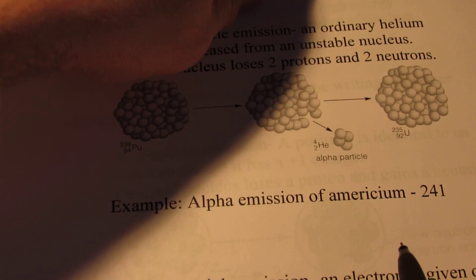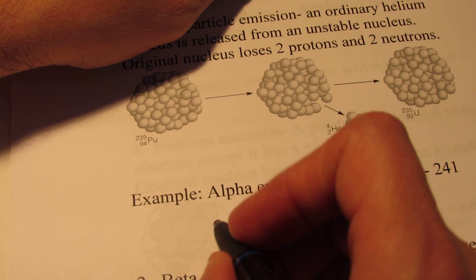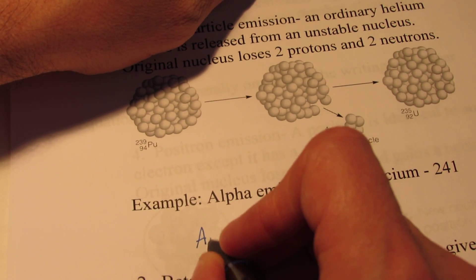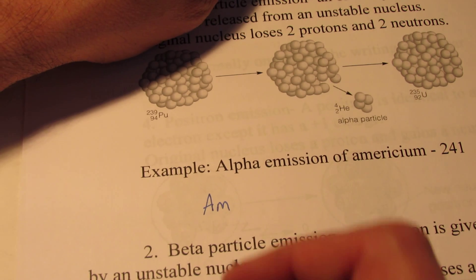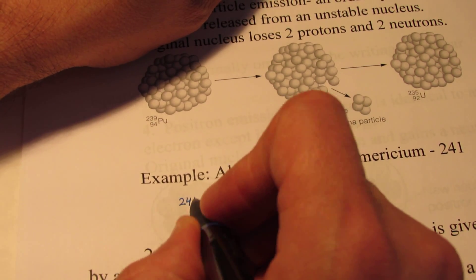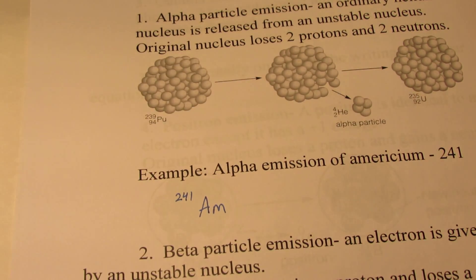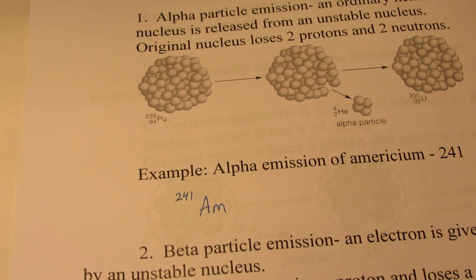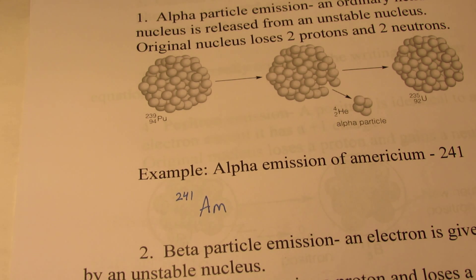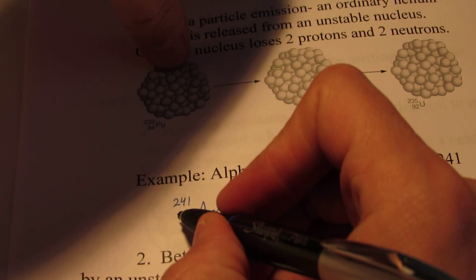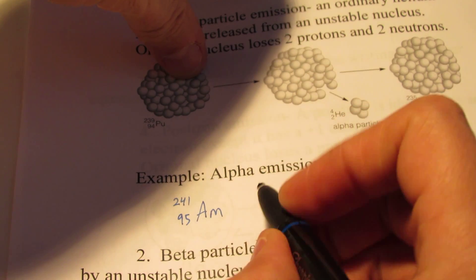Alright, you're back. The element symbol for americium is Am, its mass is 241. Now the atomic number of americium we're going to have to look up. And so americium has an atomic number of 95. So there's 95 protons.